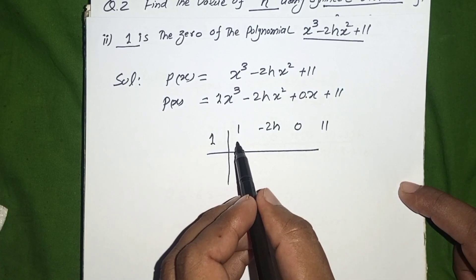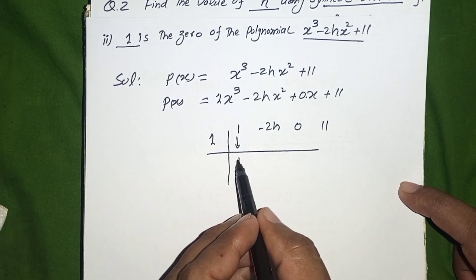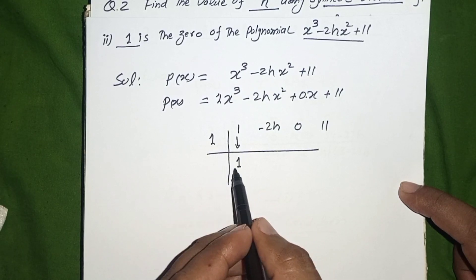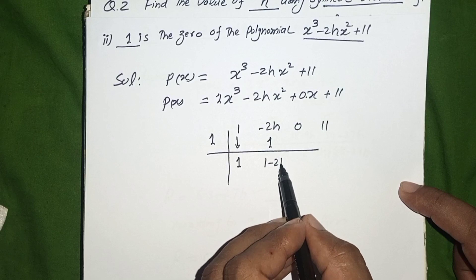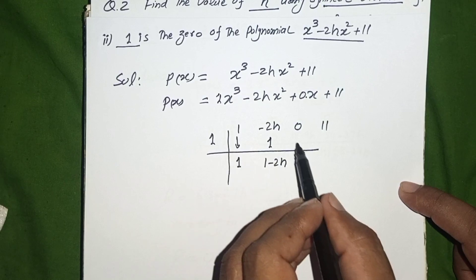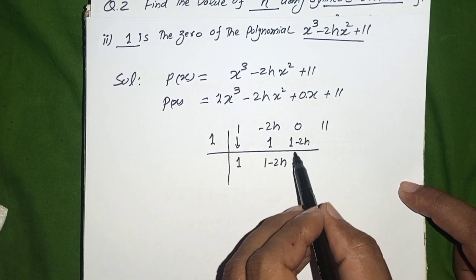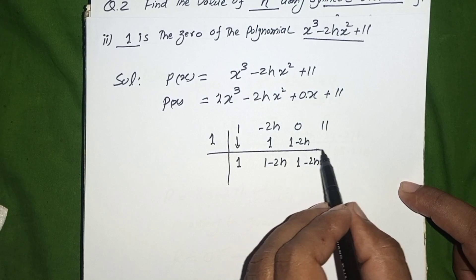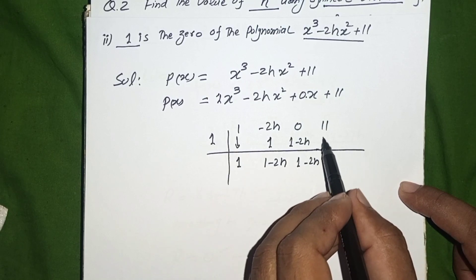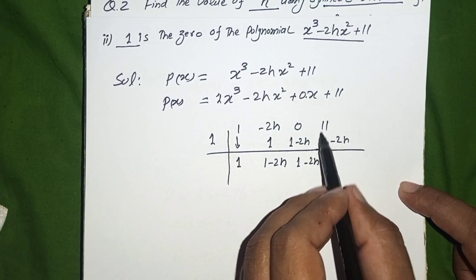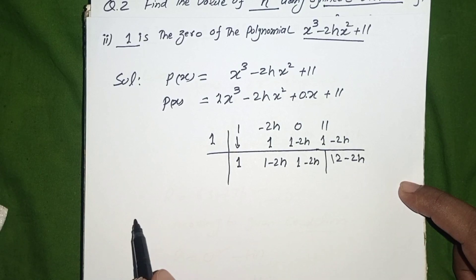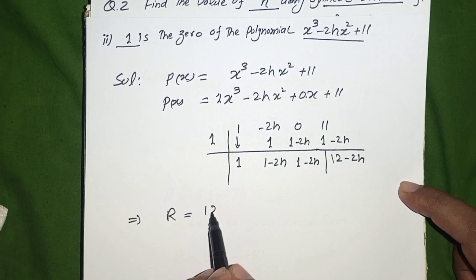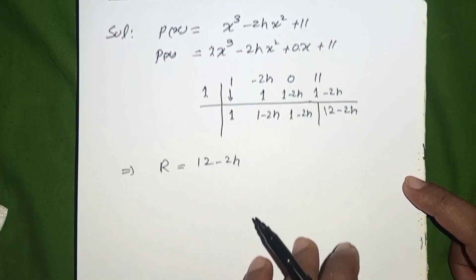For synthetic division, we write the first coefficient as-is: 1. Multiply 1 by 1, we get 1. Add to -2H: 1 - 2H. Multiply 1 by (1 - 2H): still 1 - 2H. Add to 0: 1 - 2H. Multiply 1 by (1 - 2H), then add to 11: we get 12 - 2H as the remainder.